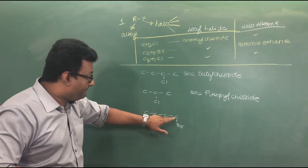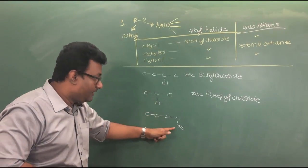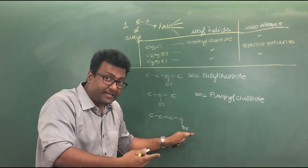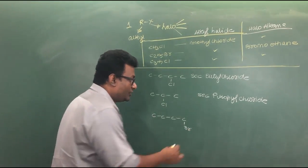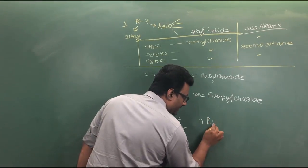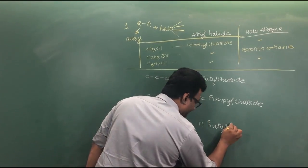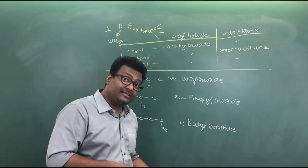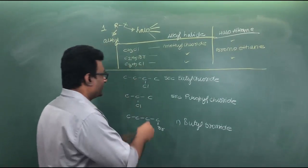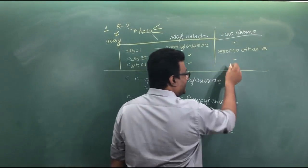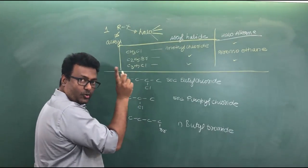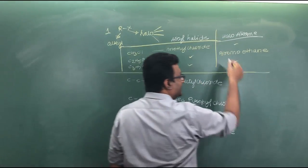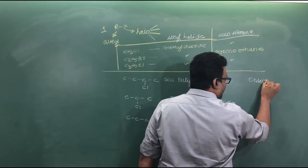For butyl bromide where the functional group is attached to the first carbon — the end carbon — this is called n-butyl bromide. In the IUPAC naming system, counting one, two, three, four carbons with chloro as the functional group gives us chlorobutane.